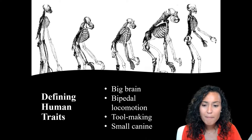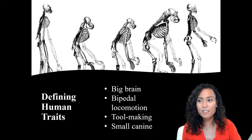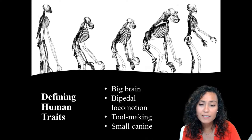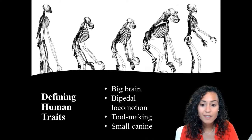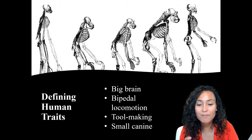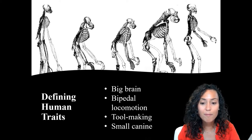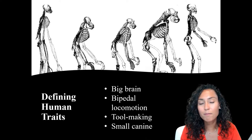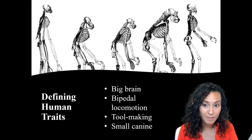One of the major questions of the 19th century has been which of these four characteristics occurred first. Up until about the mid 20th century, archaeologists largely believed that it was the big brain that developed first and distinguished our hominin ancestors from other apes. This first development of the brain then led to other things like bipedalism and tool making.